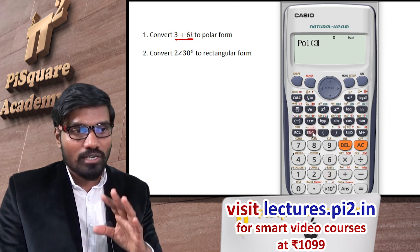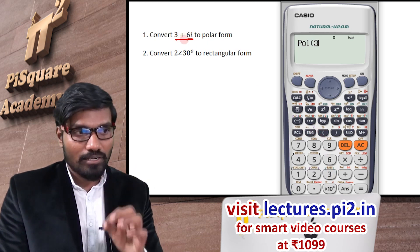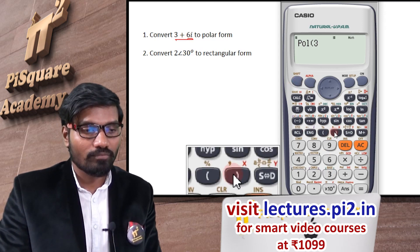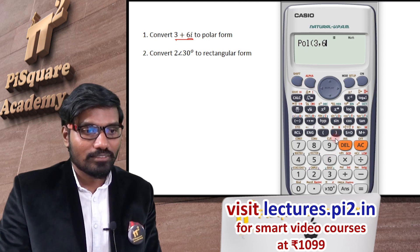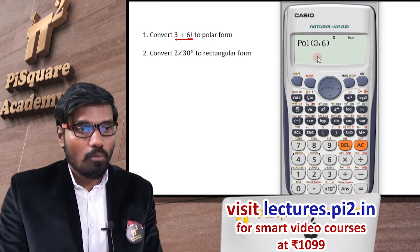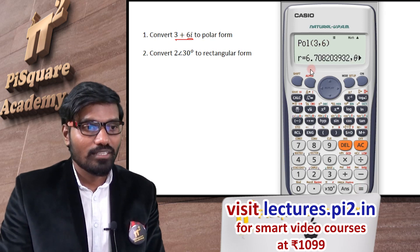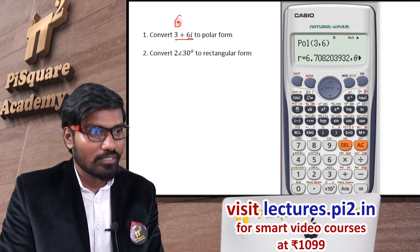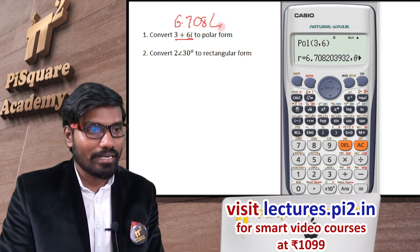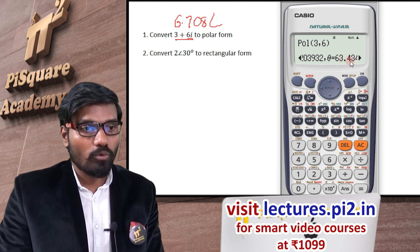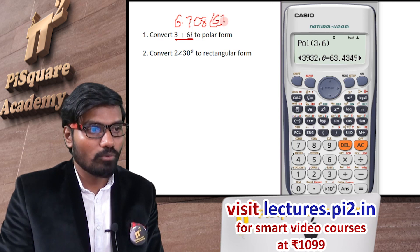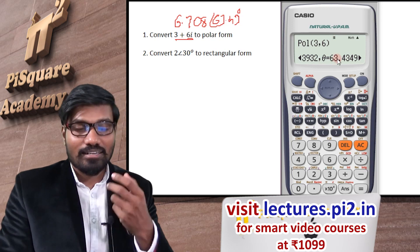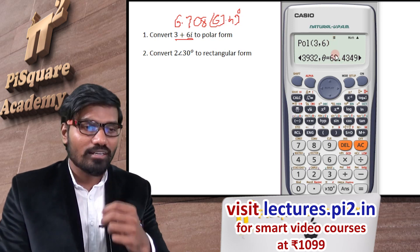The imaginary i function will not be used here. 3 is the real part and 6 is the imaginary part. Use a comma — you can see the comma button here — so the syntax is Pol(3, 6). The polar form result: the R value, that is the magnitude, is 6.708 at an angle of 63.43 degrees, because the calculator is in degrees mode. If you keep the calculator in radian mode, results will be in radians.